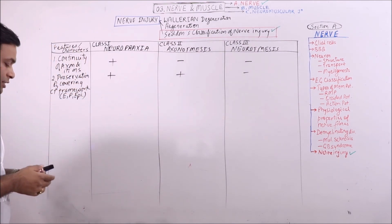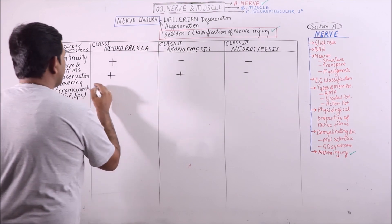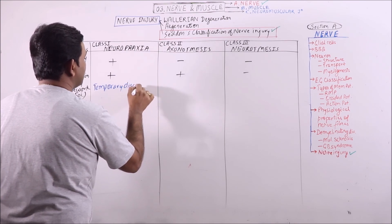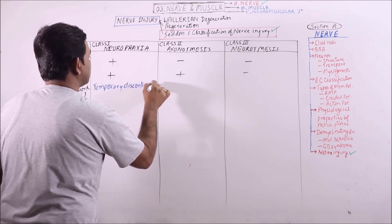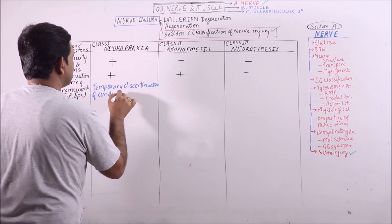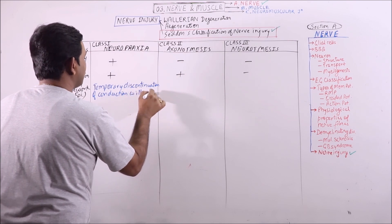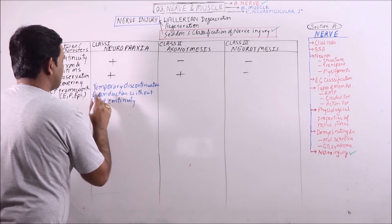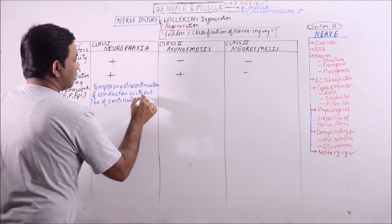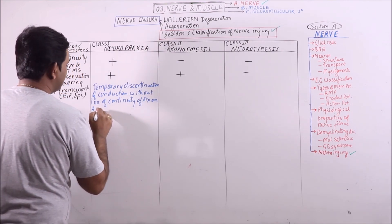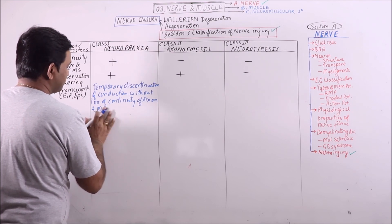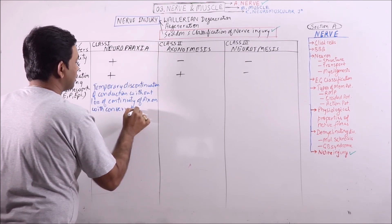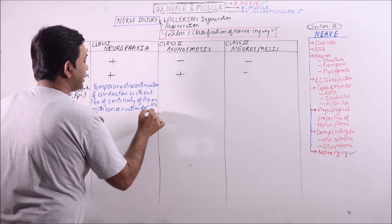What is neuropraxia? Neuropraxia is basically a temporary discontinuation of conduction without loss of continuity of the axon and myelin sheath, or with conservation of the myelin sheath and connective tissue framework.